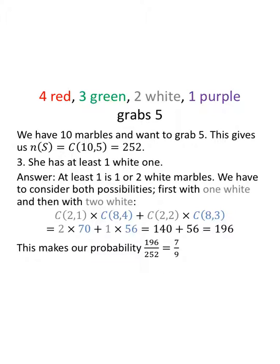We have ten marbles, want to grab five. We want to look at the possibility that she has at least one white. At least one means one or more. In this case, we only have two white, so one or two white marbles. We have to consider both possibilities. First, I'm going to look at one white, and then I'm going to look at two white. Notice here I have four red in red, three green in green, one purple in purple, but I didn't think it would be very effective to put the two white marbles in white on a white background. So they look a little gray. It's just the way it is.